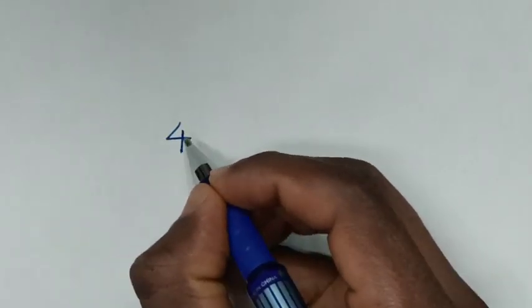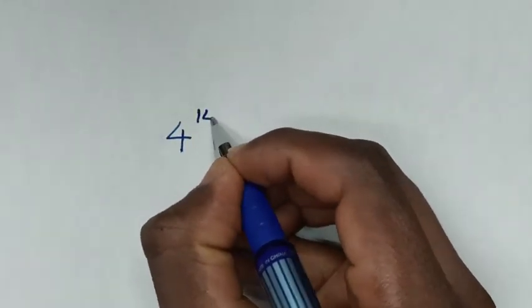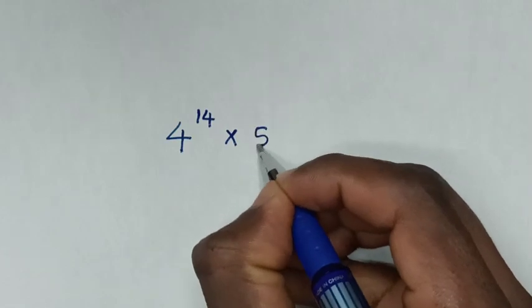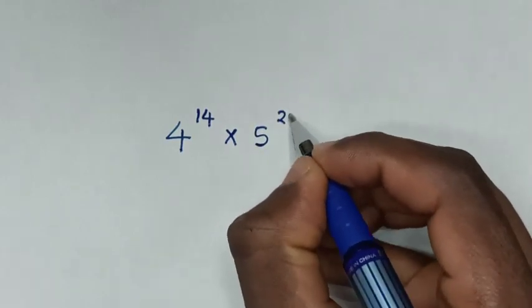Hello, how to solve 4 to the power of 14, then times 5 to the power of 23.